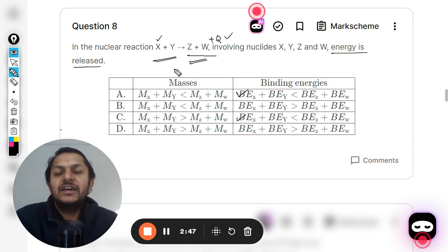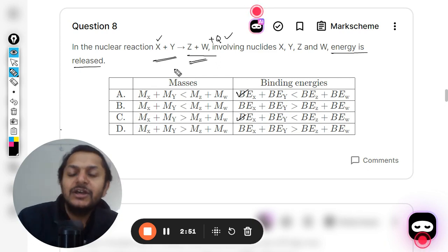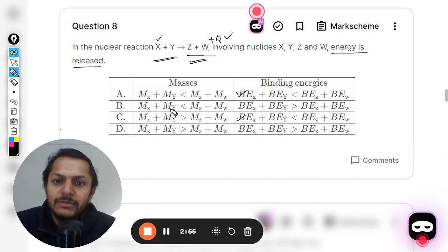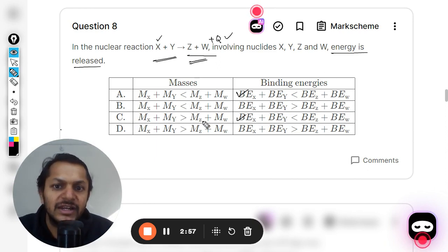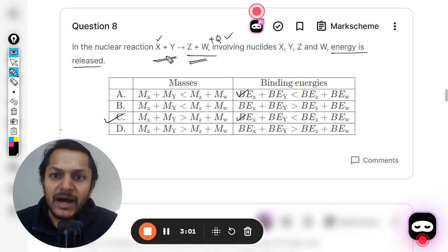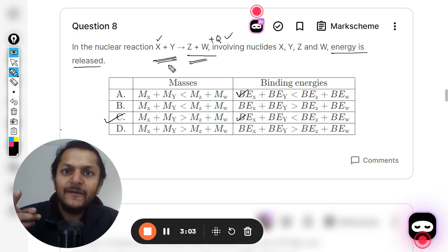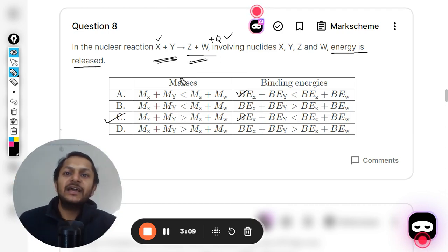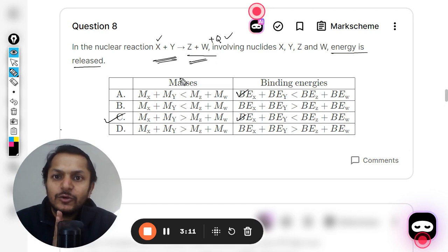So the binding energy of Z and W is more. Why is it more? Because the mass is converted into energy. It means that the mass of X and Y should be greater than the mass of Z and W. C will be the correct answer. So mass is more for X and Y, binding energy is more for Z and W, so answer will be C.